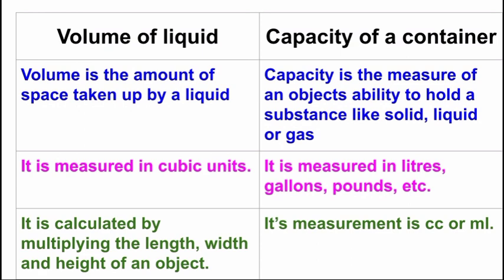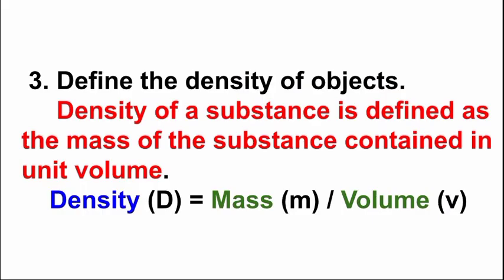Capacity of a container is measured in cc — cc means cubic centimeter or ml. Third question: Define the density of objects. Answer: Density of a substance is defined as the mass of the substance contained in unit volume. The formula of density is mass divided by volume. The SI unit of density is kg per meter cube. The CGS unit of density is gram per centimeter cube.